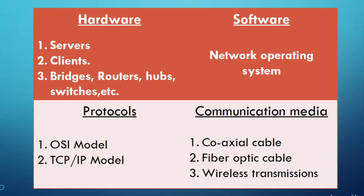Hardware on its own has no identity unless somebody drives it. Just like an operating system drives a computer, you need a network operating system, or NOS, to make your computer work on a network. Solid examples of network operating systems are Linux and Unix. You also need certain protocols — rules and regulations. Protocol standards include the OSI model, which stands for Open System Interconnection, and the TCP/IP model, the Transmission Control Protocol and Internet Protocol model, each having different layers and mechanisms.